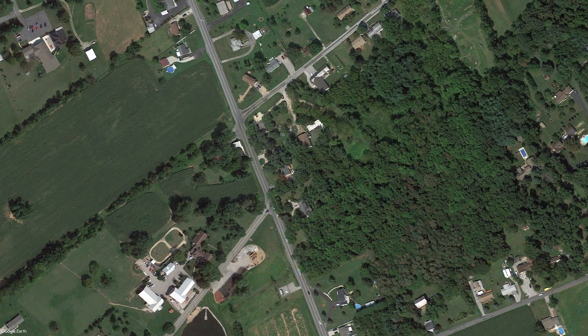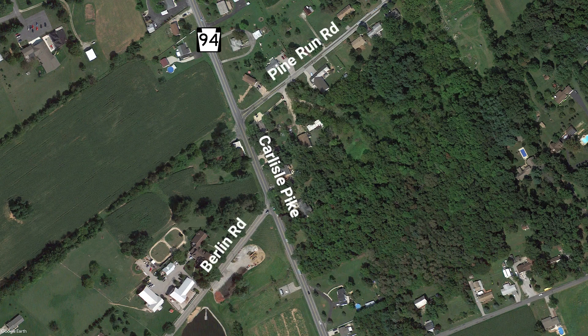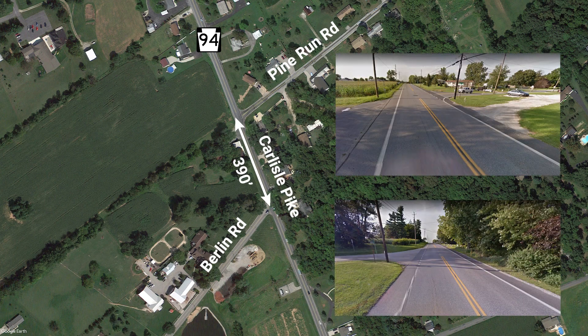The example used in this video is along Carlisle Pike, or PA94, in Adams County between Berlin Road and Pine Run Road. PA94 had a two-lane cross-section with no median. Berlin Road and Pine Run Road intersect PA94 390 feet apart from one another. Both are minor stop-controlled intersections with no dedicated turn lanes. We have gathered traffic data as well as crash data for the last five years for the existing condition. Let's begin the analysis.